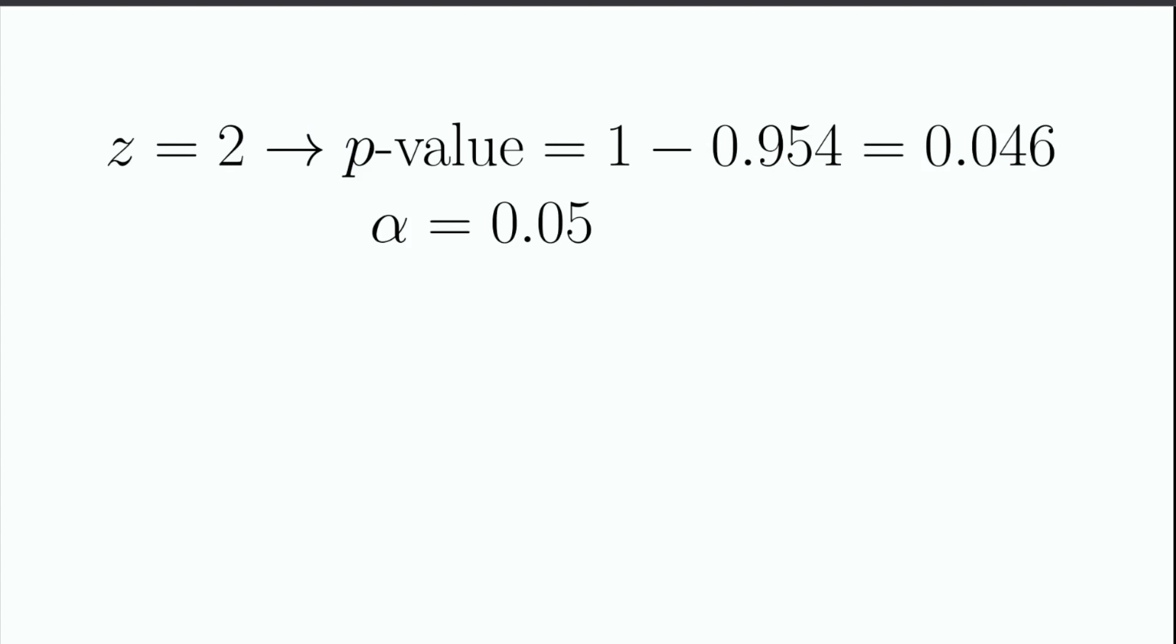If we take the p-value from our example, where we had a two-tailed z-score of 2 and a p-value of 0.046, and perform a significance test with an alpha of 0.05, we need to ask the question, is the proportion of times this observation happens by chance smaller than our significance level? Mathematically, we are asking whether the p-value is less than alpha.